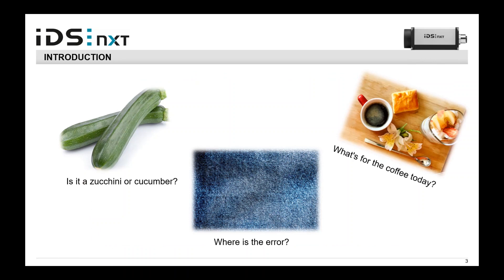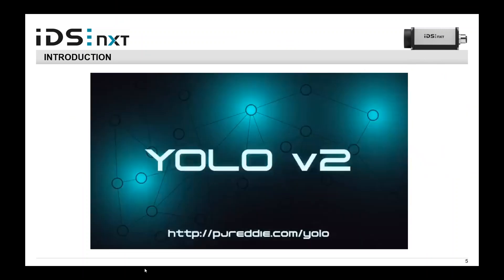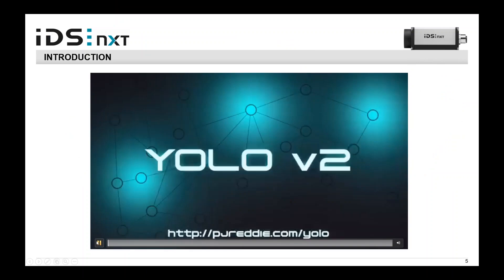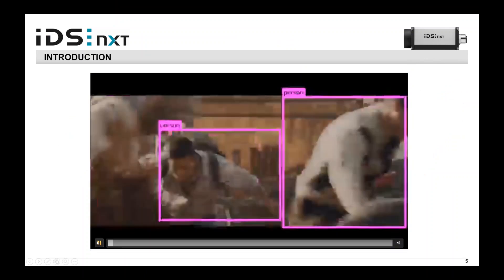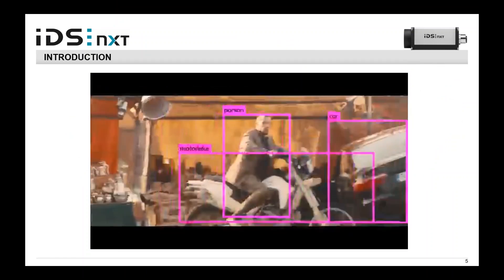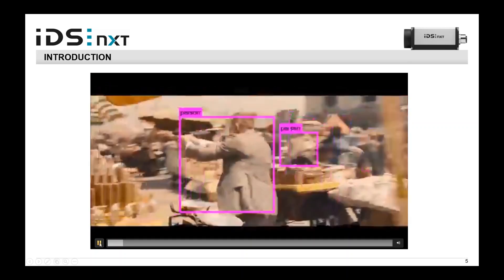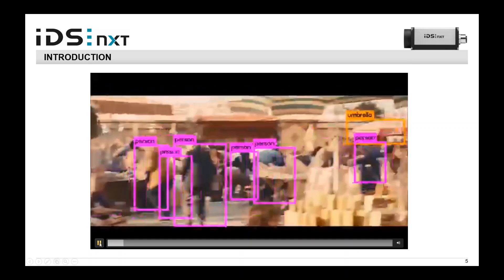Besides the algorithm, we now also have hardware available where we can run deep learning very quickly, as the next example will show. In a short scene from a James Bond movie, we see that in real time it can detect and locate objects.